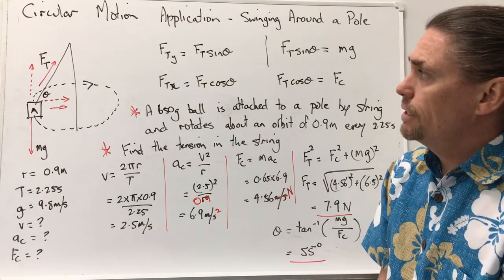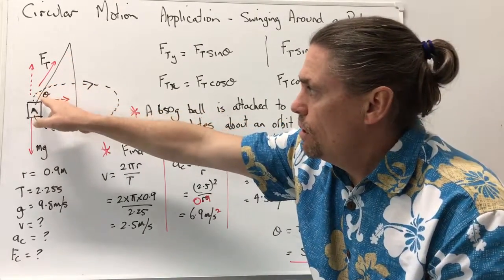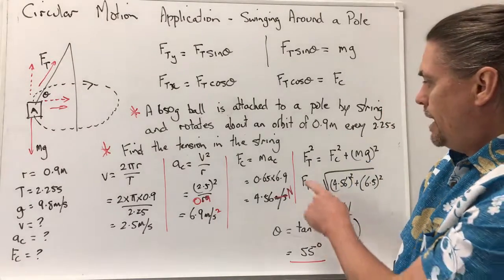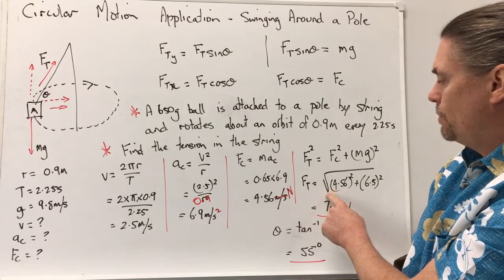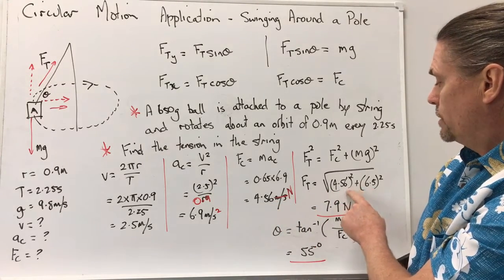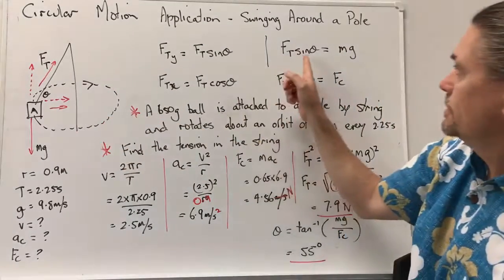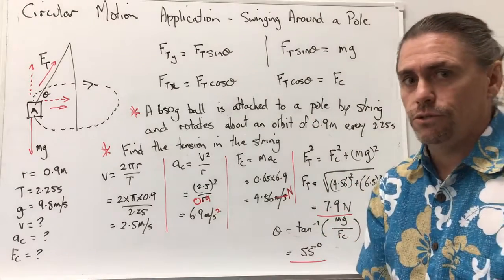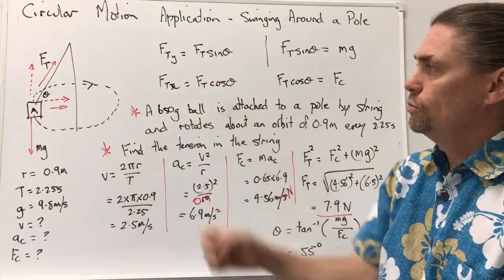Now going back to our diagram, we know that our tensional force is equal to our horizontal and our vertical components, so we can use Pythagorean theorem and rearrange it to get Ft, our tensional force, being equal to the square root of 4.56 squared plus 6.5, which is mg, in other words that's equal to Ft sin theta, which gives us a value of 7.9 newtons. So the tensional force for a 650 gram ball will be 7.9 newtons.